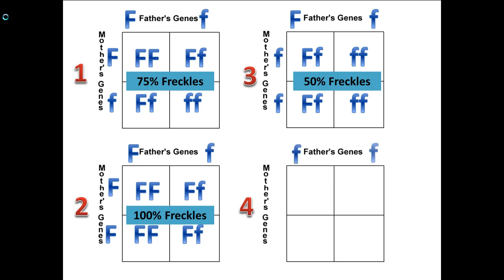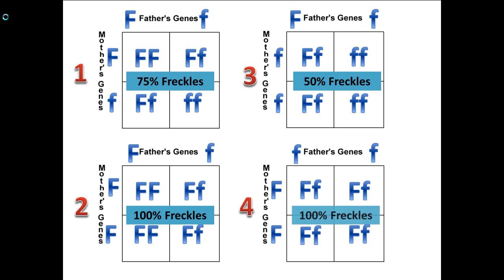In our last example, dad is homozygous recessive and mom is homozygous dominant. Looking at this combination, 100% of the kids have freckles even though dad didn't have freckles, but now all of them are going to be carriers of both the recessive and the dominant allele.